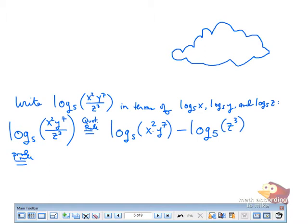So what does that look like? Log base 5 of x squared plus log base 5 of y to the 7th minus log base 5 of z cubed. Good.